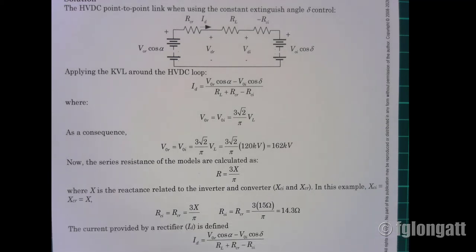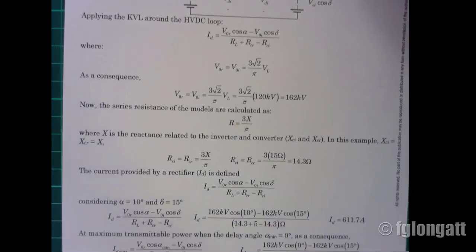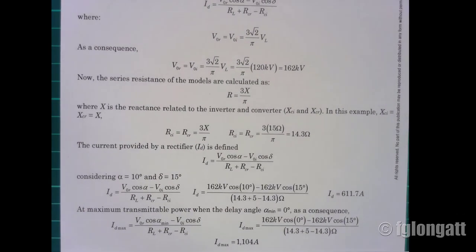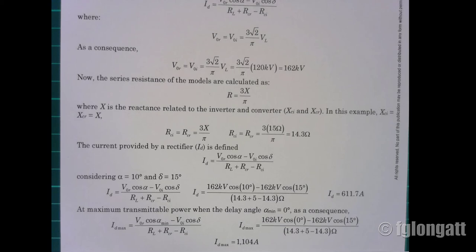Now using the basic equation derived from Kirchhoff's Voltage Law to obtain the current from the rectifier: for the first question, with alpha equal to 10 degrees and delta equal to 15 degrees — that is the maximum angle from the inverter, starting from delta_0 of 10 degrees with the 5-degree margin — the current for this specific operating condition is 611 amps.